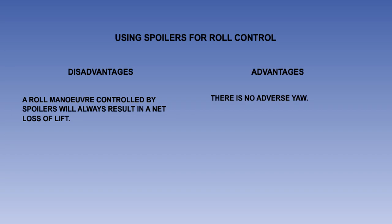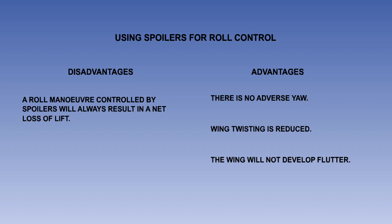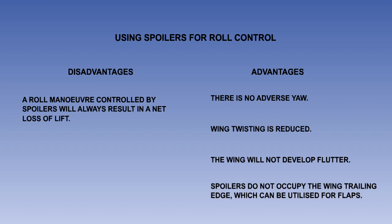However, the spoiler has several advantages over the aileron. There is no adverse yaw — the raised spoiler increases the drag, so the yaw is in the same direction as the roll. Wing twisting is reduced, as the loss of lift is distributed across the chord rather than being concentrated at the trailing edge. It does not suffer from the phenomenon of flutter. Spoilers do not occupy the wing trailing edge, so there is more space available for trailing edge flaps.